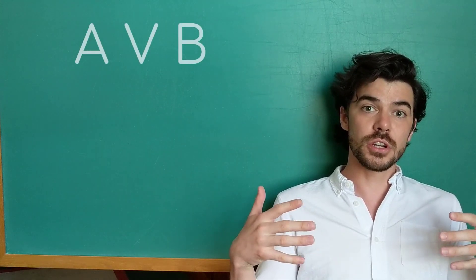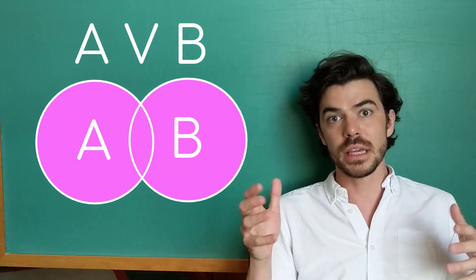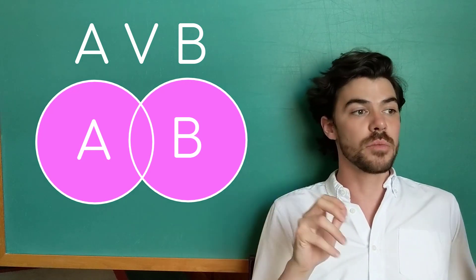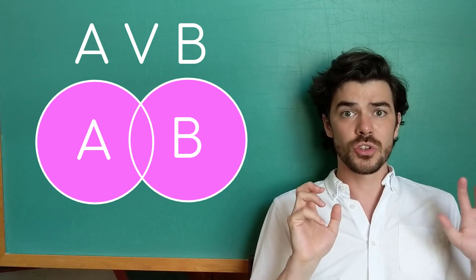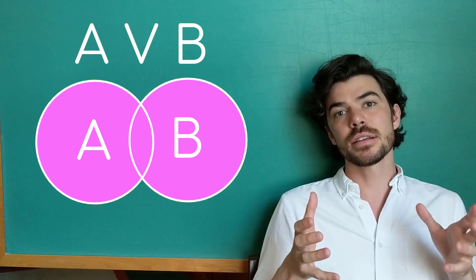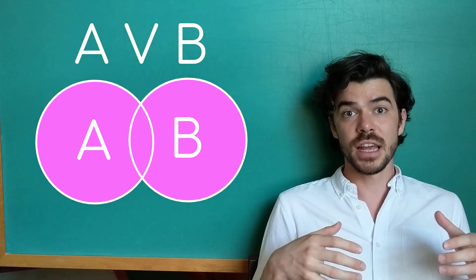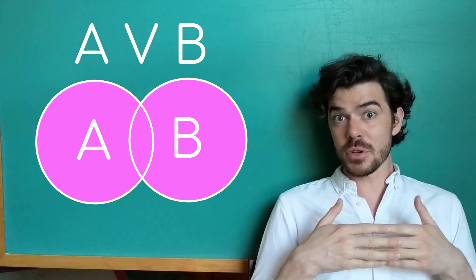Moving on to disjunction, we combine A with B. A could be Don Quixote is a knight and B could be Don Quixote is famous. So this whole sentence would say Don Quixote is a knight or Don Quixote is famous. And notice that because this is inclusive disjunction, it includes the A circle, the B circle, and the overlap between them.